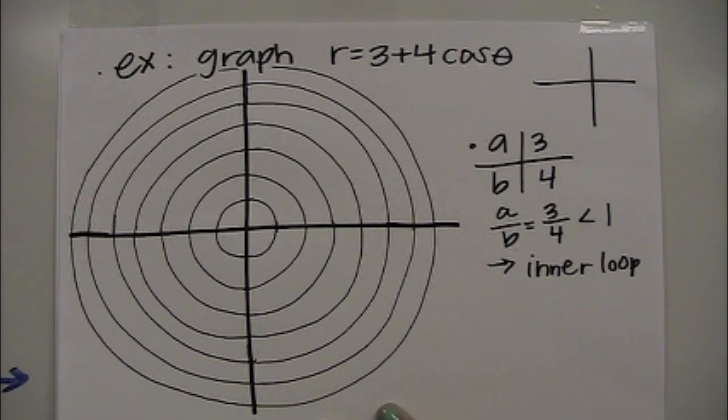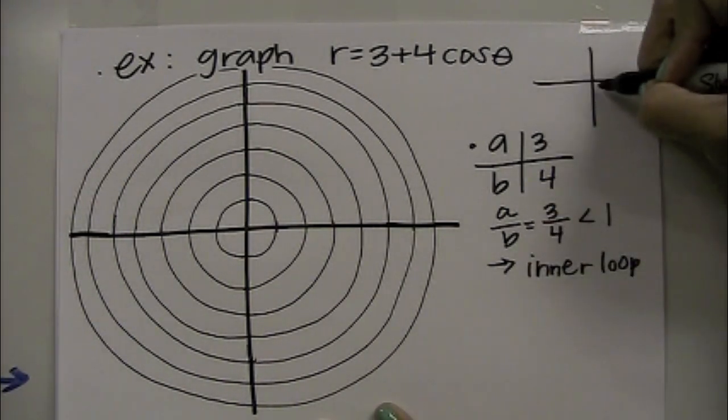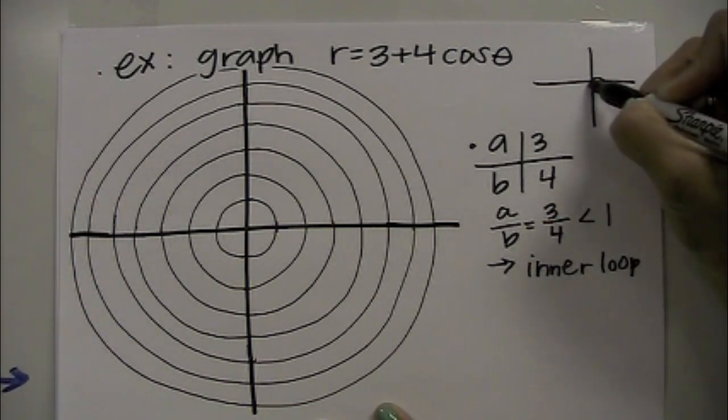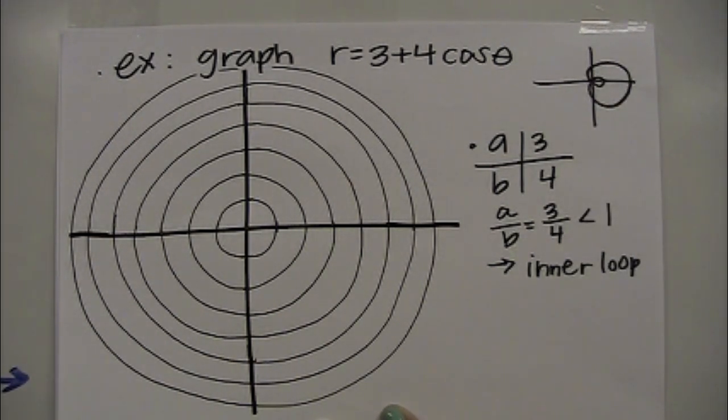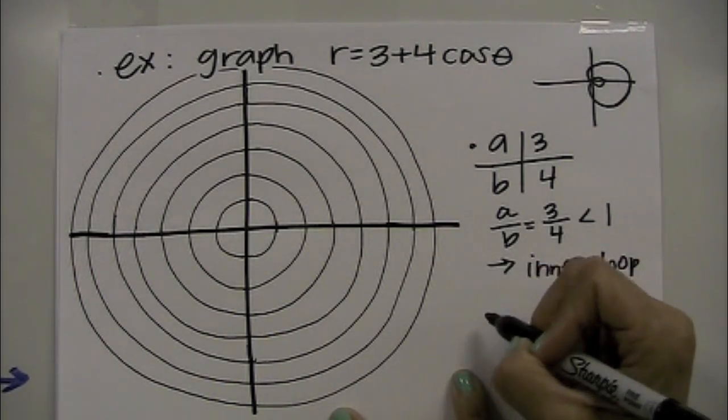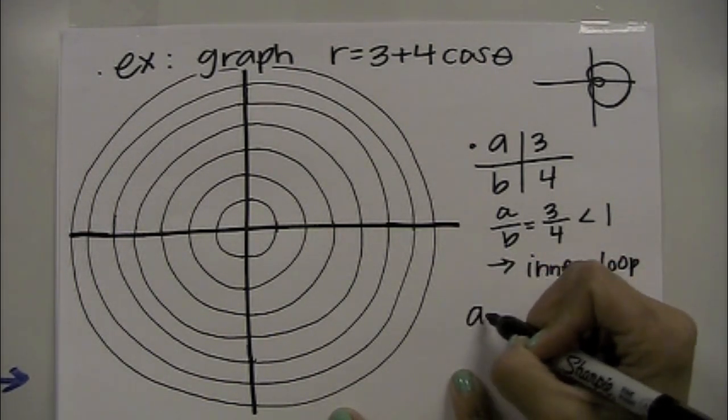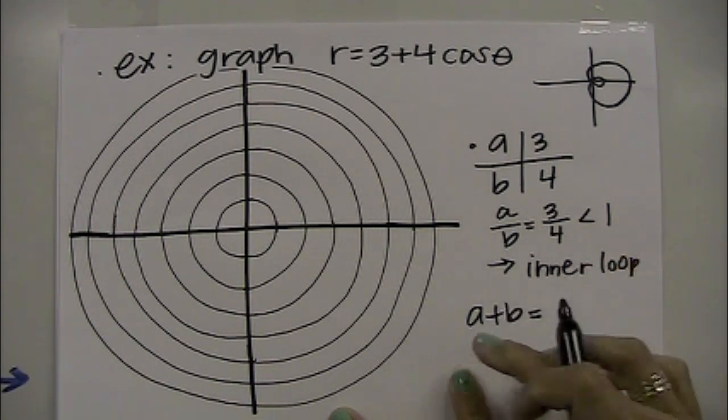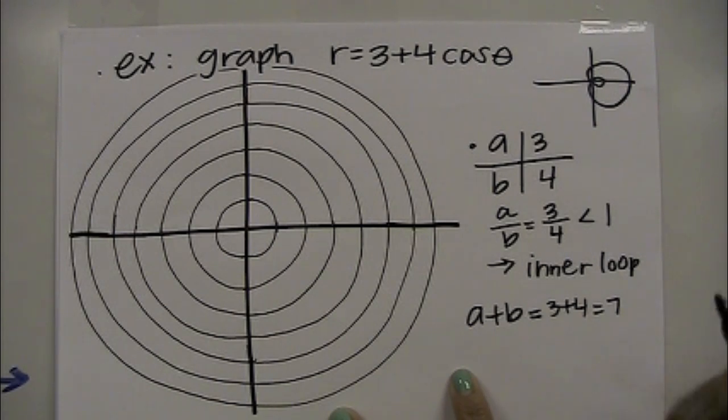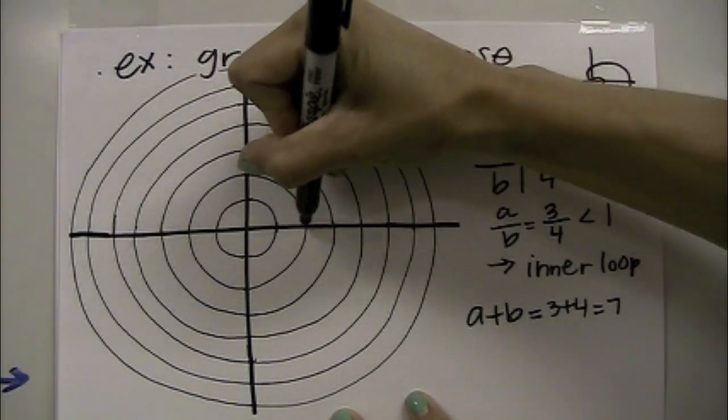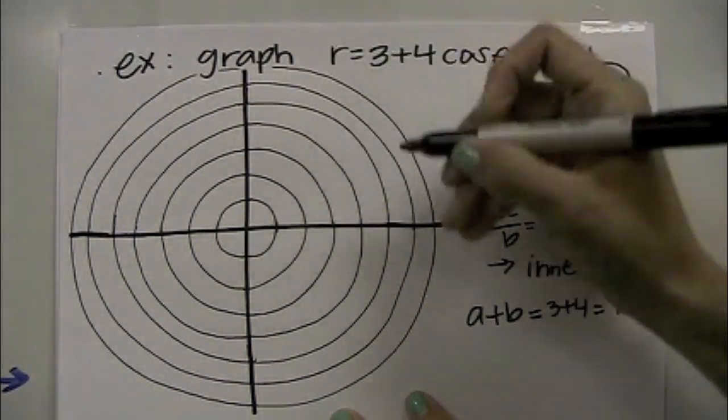So without doing any work, we know that this graph will be somewhere over here looking kind of like that. Next I want to talk about if we were to take a plus b. If we do that, we get 3 plus 4, which is 7. So 7 is how far this graph stretches on the main axis, how far it comes out. So 1, 2, 3, 4, 5, 6, 7.